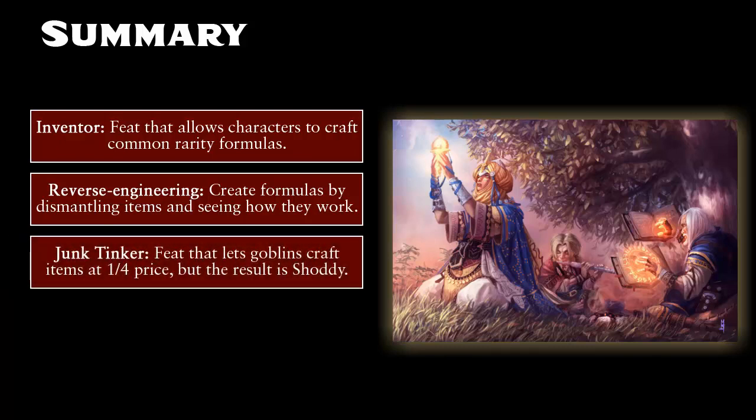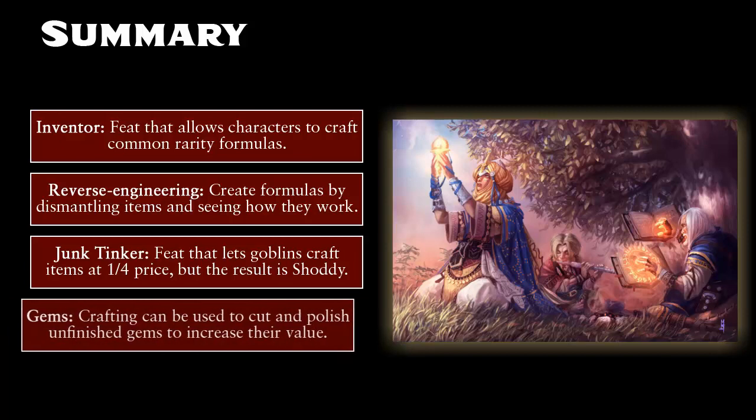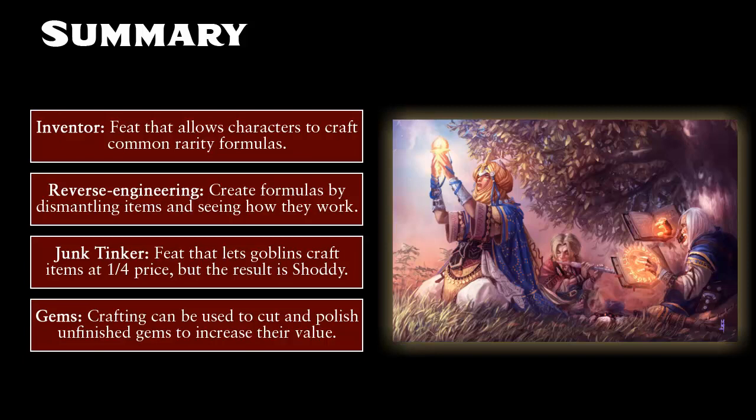Goblins can also craft items a little bit quicker and relatively cheaper by using the Junk Tinker feat. This works like normal crafting, except the item's price is set at one quarter of its listed price, and results in a shoddy item. Shoddy items have half the usual hit points and half the usual break threshold, and normally impose a negative two penalty to any checks made with that item, but goblins do not face that negative two penalty with shoddy items that they themselves created. And last, crafting can be used to cut and polish unfinished stones and turn them into finished gems. Unfinished gems have half the value of cut gems and are used as the initial materials needed for crafting the finished gem. And although not strictly permitted by the rules as written, some GMs might want to consider letting their players use this same framework for crafting other items like works of art, literature, paintings, and the like.